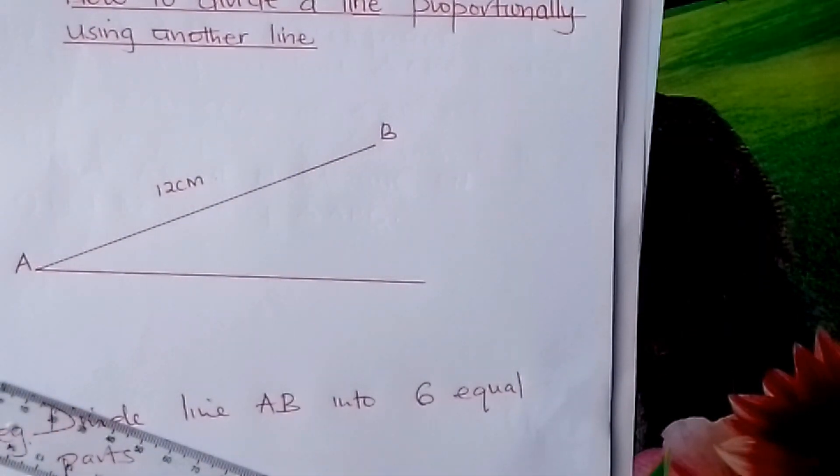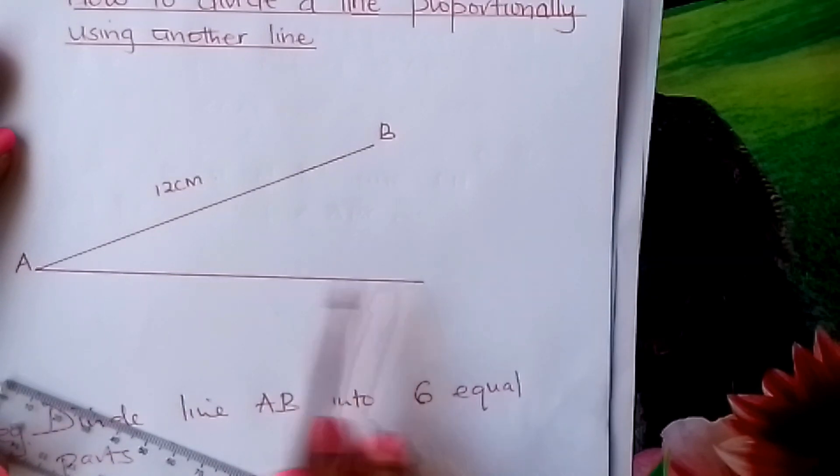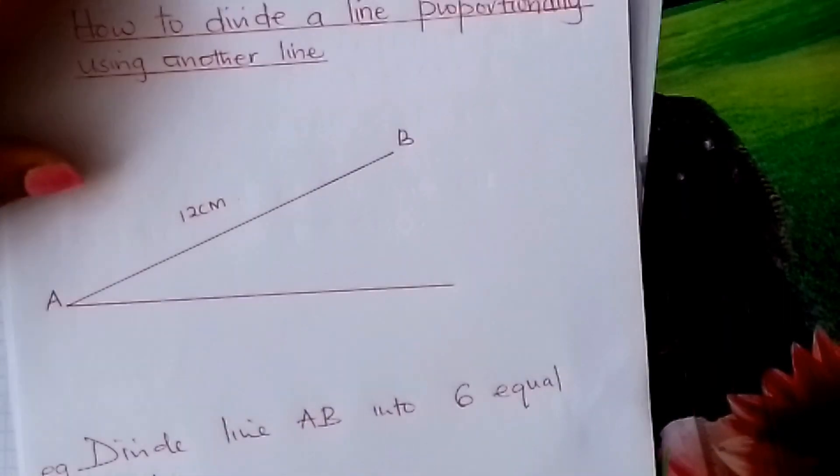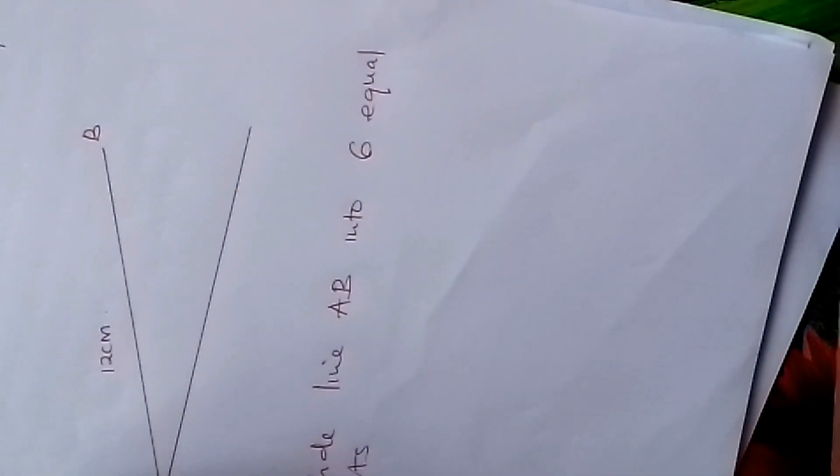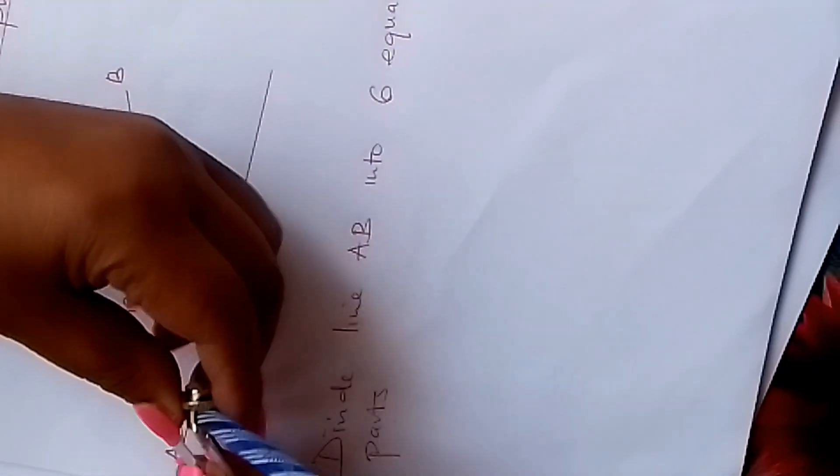From there learner, divide this line into 6 portions. So we come and put the 6 portions. You can use any radius. Suppose I use a radius here, like that.